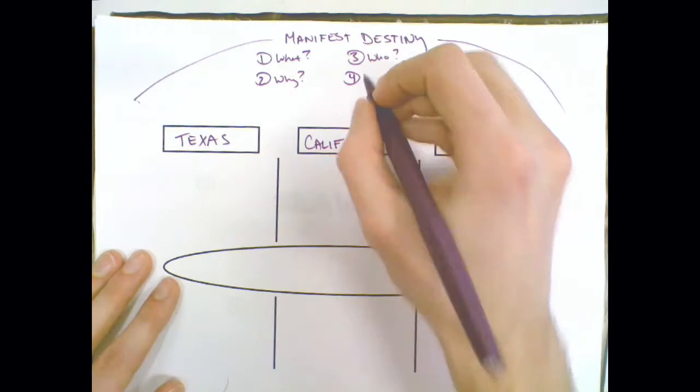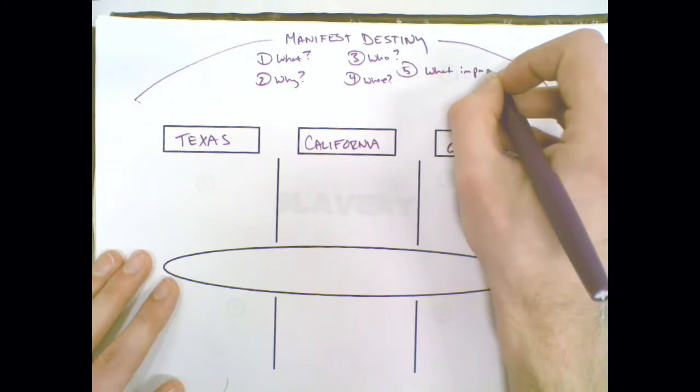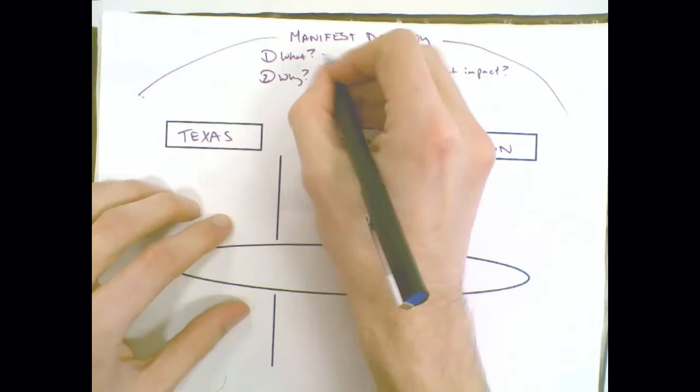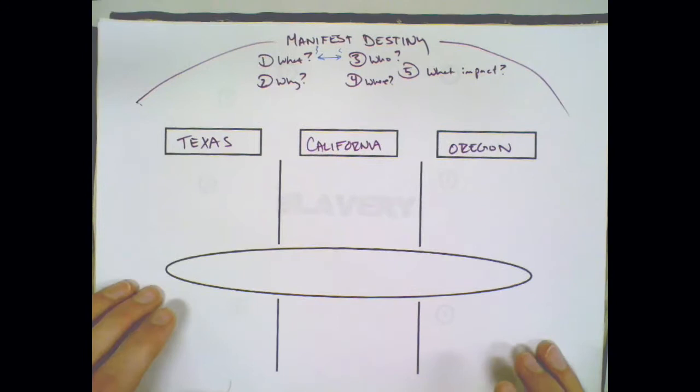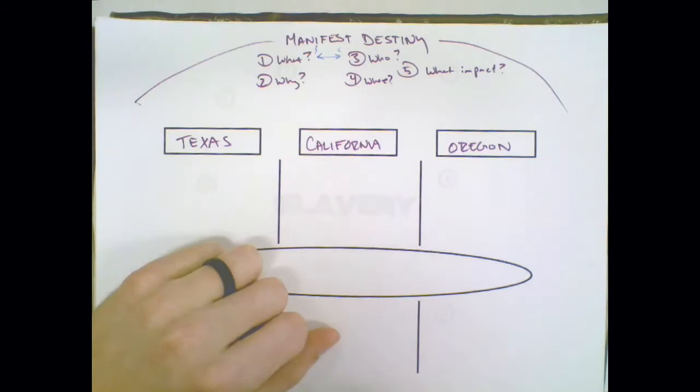With Manifest Destiny, we really have about five questions that you need to be able to know: what is it, why is it, who, where did they go, and what impact.